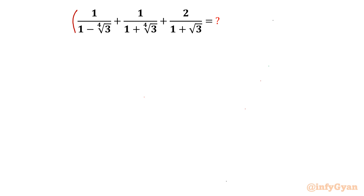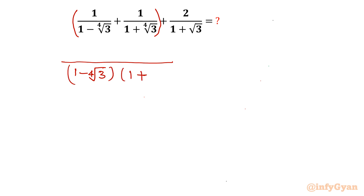I will begin with the first two terms of the given expression and take LCM. I will write both the products — both brackets — raised to the power 1 by 4. Then I will add both in the numerator, writing 1 plus 4th root of 3, plus 1 minus 4th root of 3.